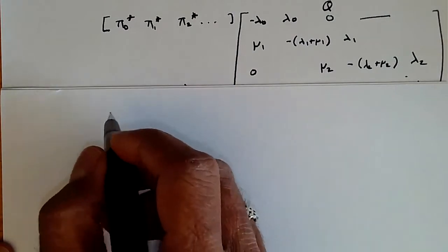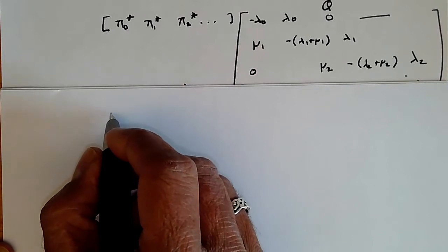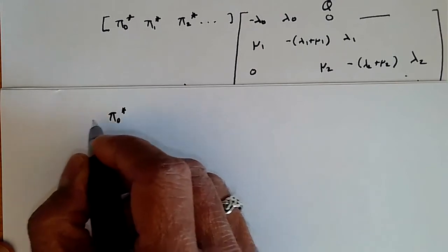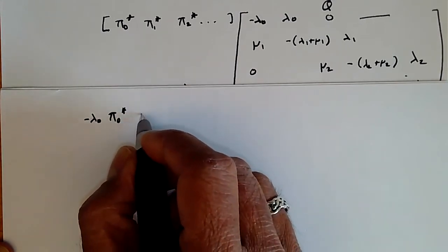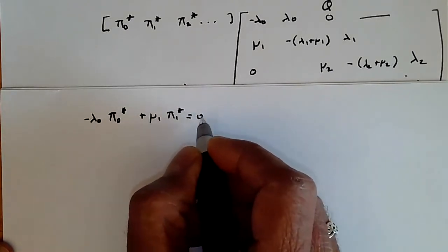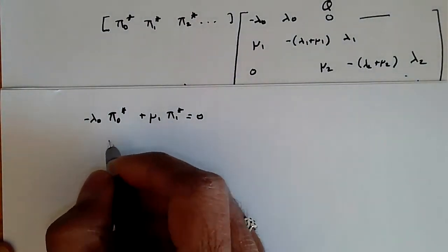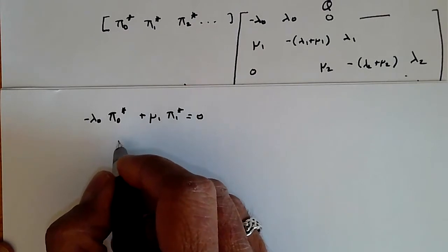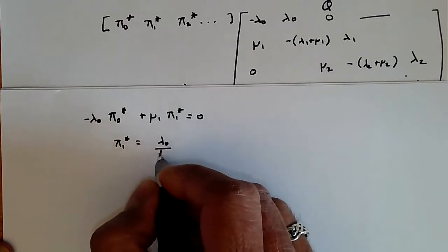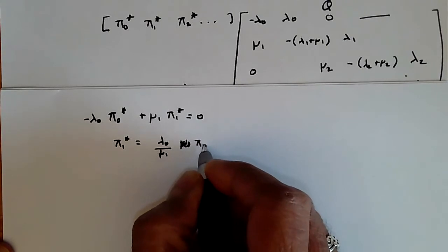If we take the first value, we see that π₀* times -λ₀, so -λ₀π₀* + μ₁π₁* = 0. That's just expanding from the first column. We can do a little bit of manipulation and write down π₁* equals λ₀/μ₁ times π₀*. So that gives us one equation.